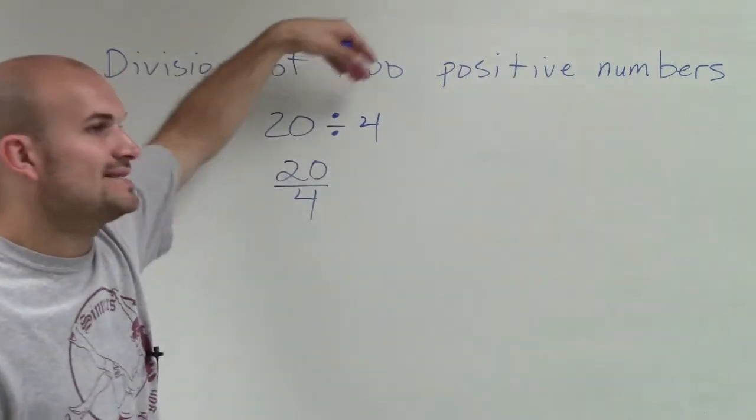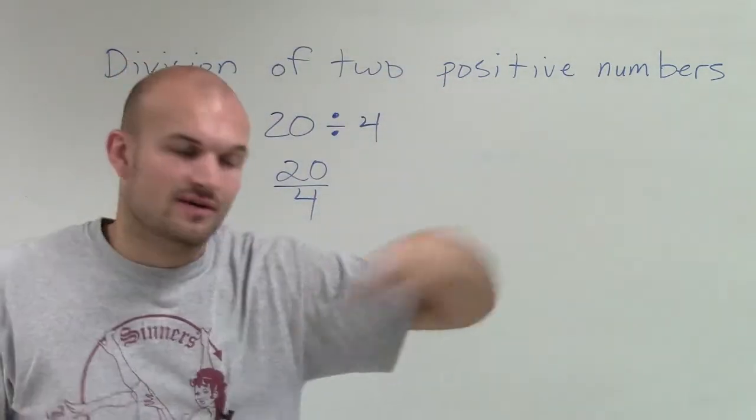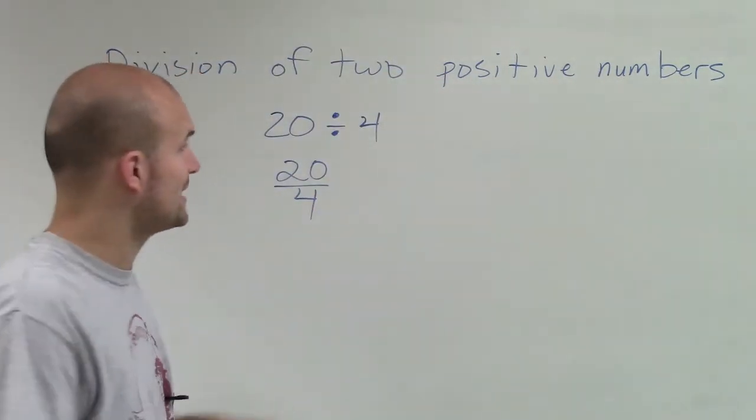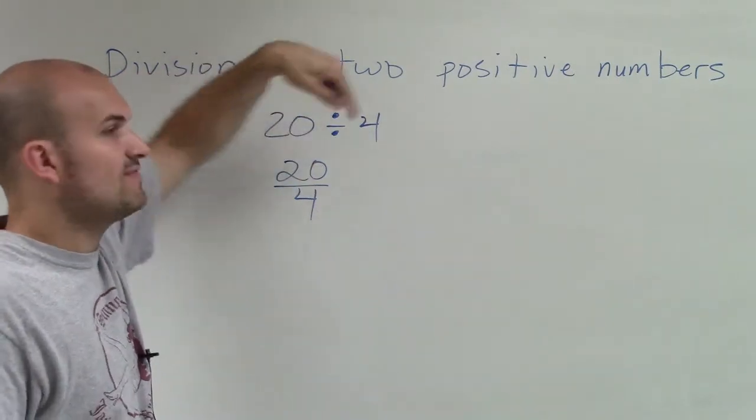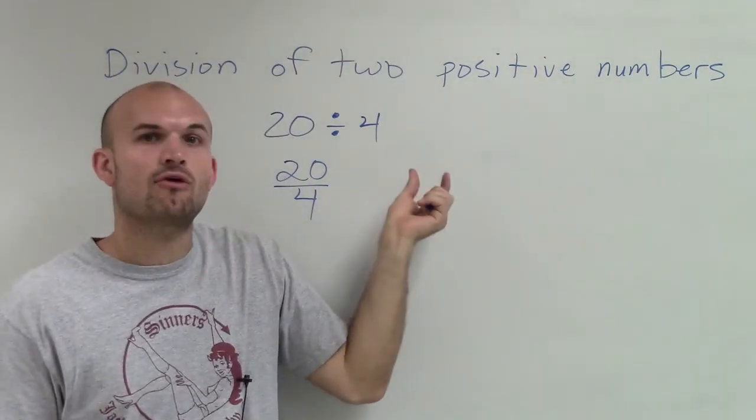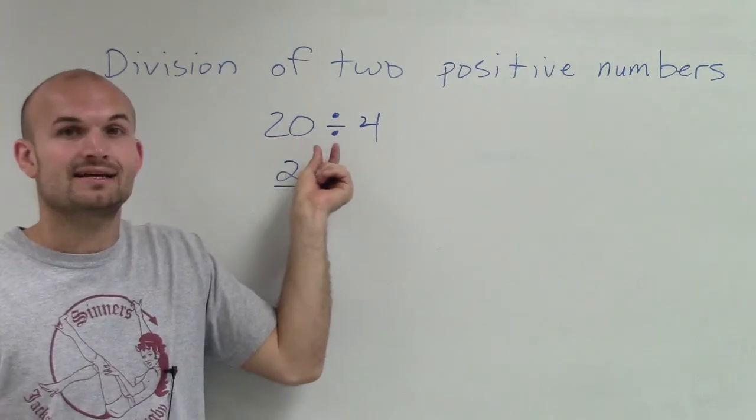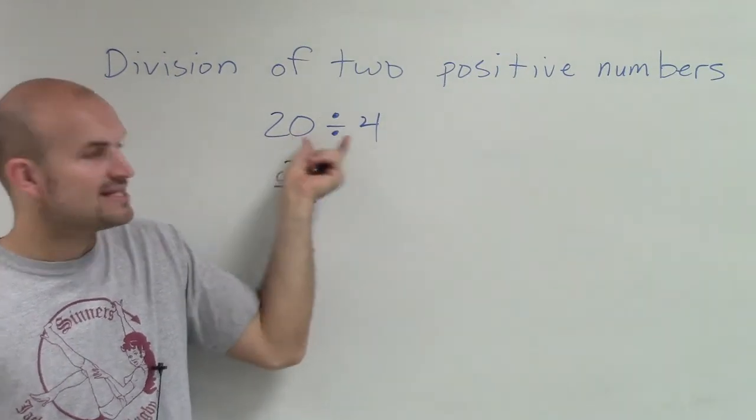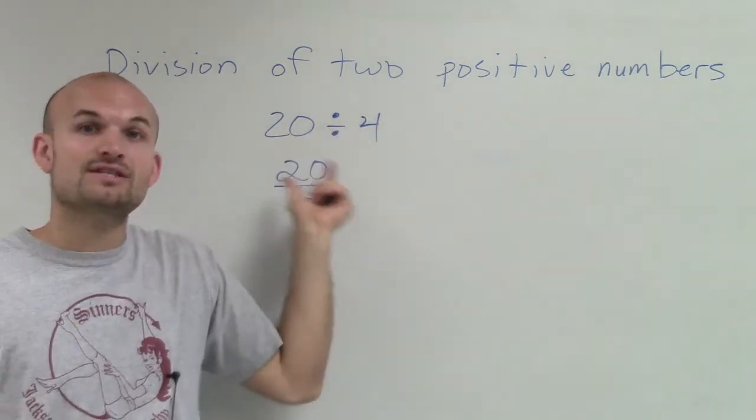When I say division, we think of it as the opposite of multiplication, or the inverse of multiplication. What it says is 20 divided by 4. How many sets of 4 can we divide into? How many sets of 4 evenly go into 20?